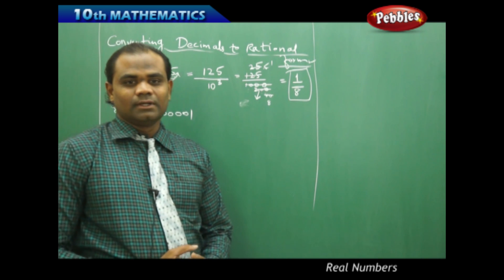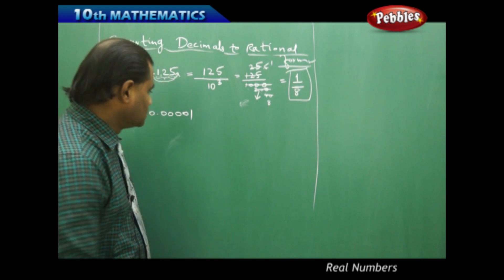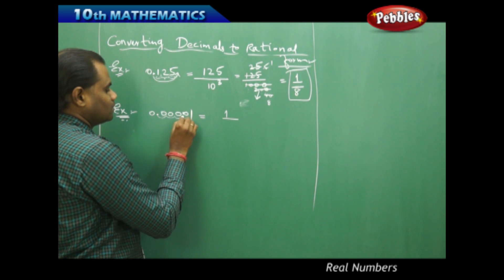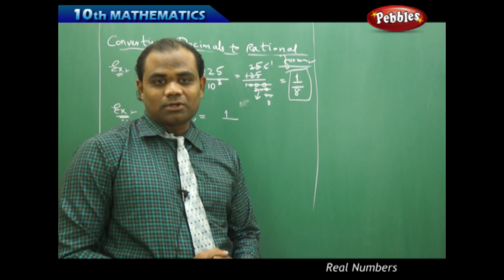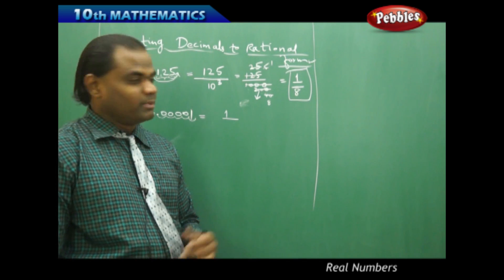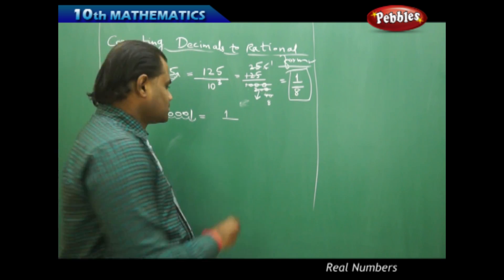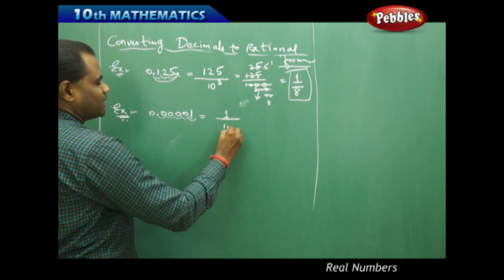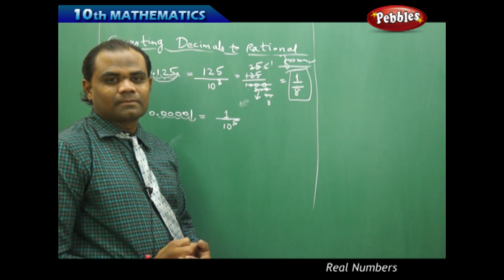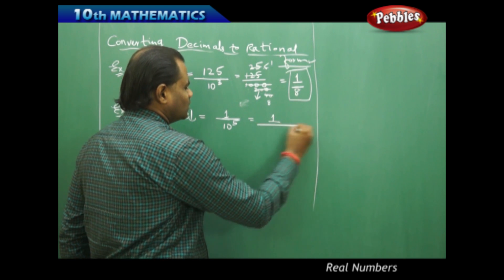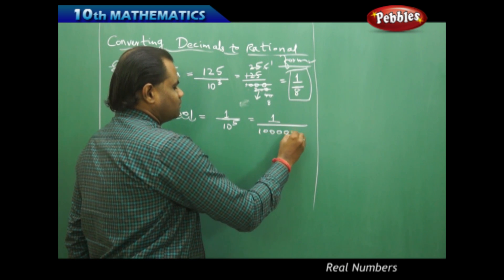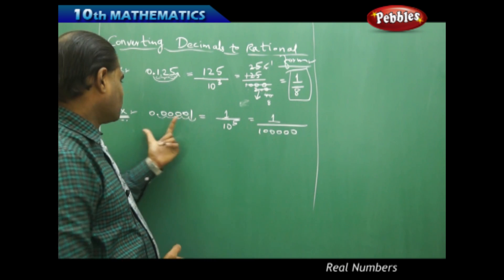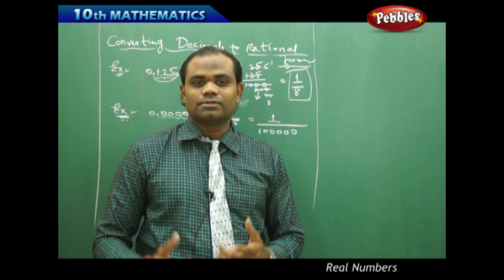Now this is the number I want to convert to rational form. In this case, I need to move the decimal 1, 2, 3, 4, 5 steps — so it's a 5-step process to move the decimal to the right to make p an integer. Therefore, because I move 5 steps to the right, I raise 10 to the power of 5, and I get 1 over 10 power 5, which is 1 over 1 lakh. So 1 over 1 lakh is the rational value for the decimal 0.00001.